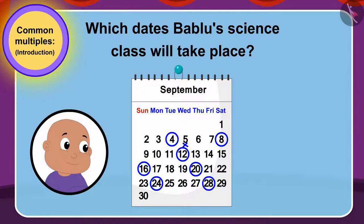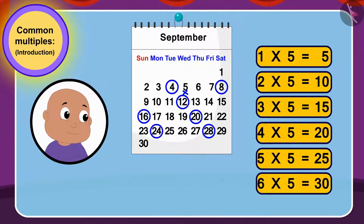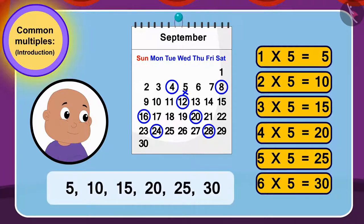Well done children, your answer is absolutely correct. We can find multiples of five in this way by using tables of five. Bablu will go to science class on five, ten, fifteen, twenty, twenty-five and thirty dates.